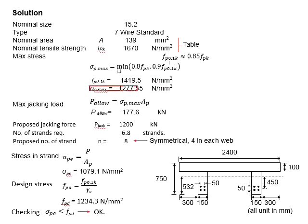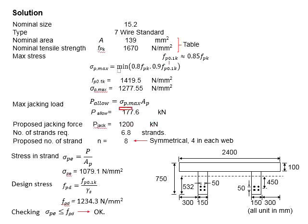Based on the maximum stress in the tendon, you can determine the maximum jacking load. It is obtained by multiplying the maximum stress with the area of the tendon. The total jacking force is 1200 kN. Dividing this by the maximum jacking load of each tendon, you get 6.8 strands.